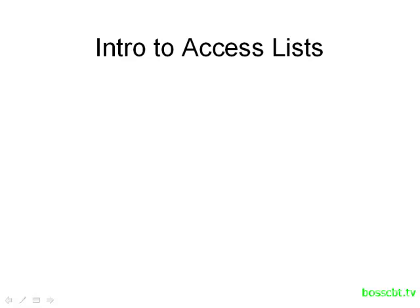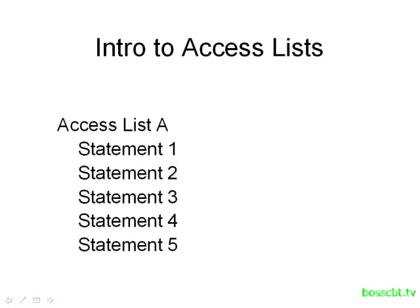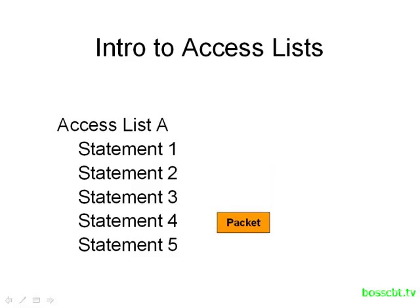In this tutorial, we're going to start off by covering all the basics of Access Lists. When you have an Access List, really all it is is a series of statements, and traffic is going to be compared to each statement. So a packet will be compared to each one until a match is found.